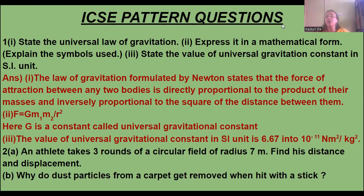The value of the universal gravitational constant in SI units is 6.67 into 10 to the power minus 11 newton meter square per kg square. So its unit in the SI system — the value is 6.67 into 10 to the power minus 11 newton meter square per kg square.